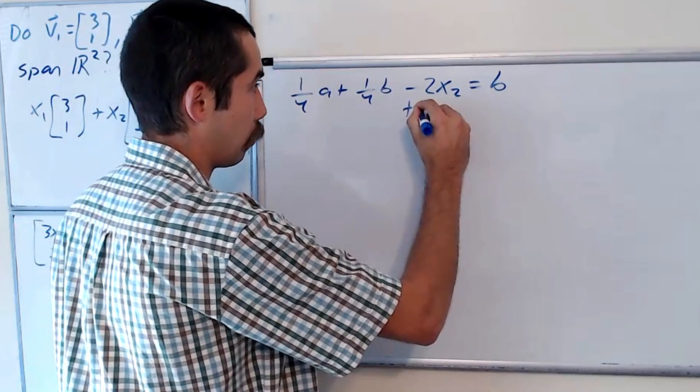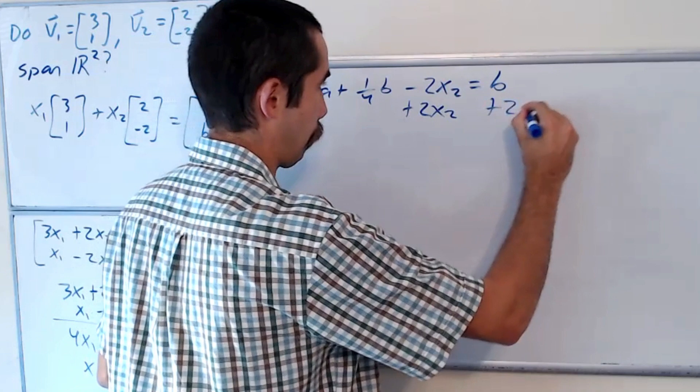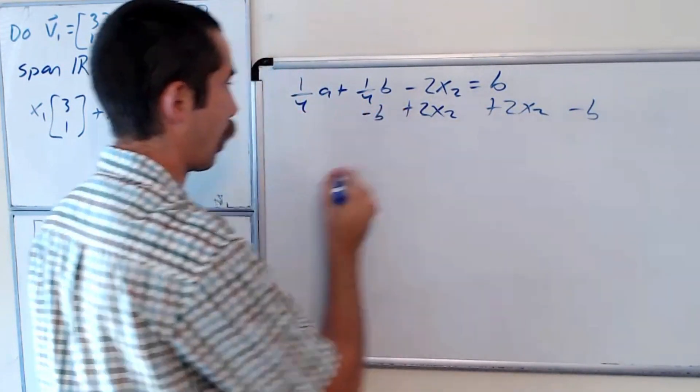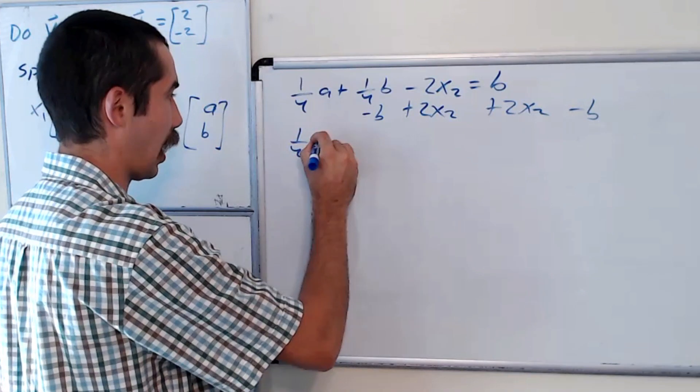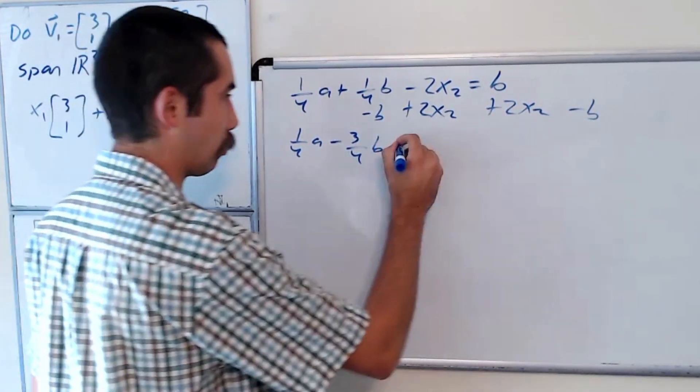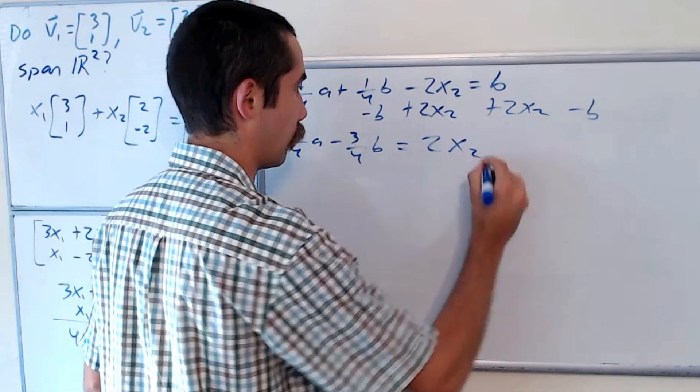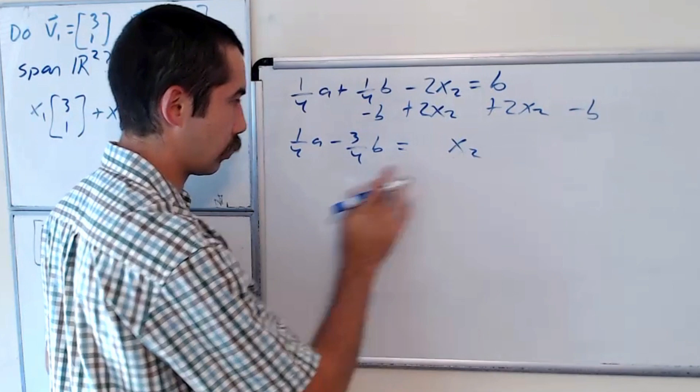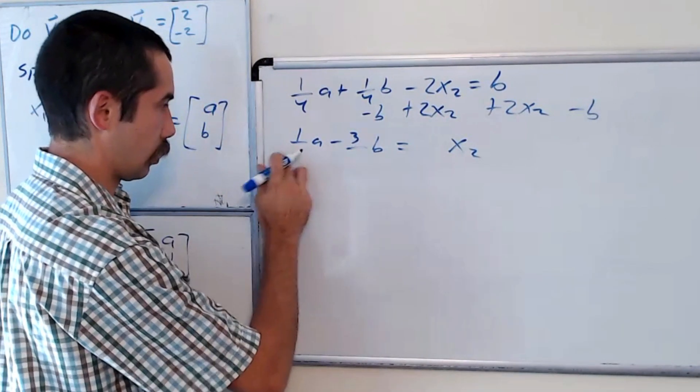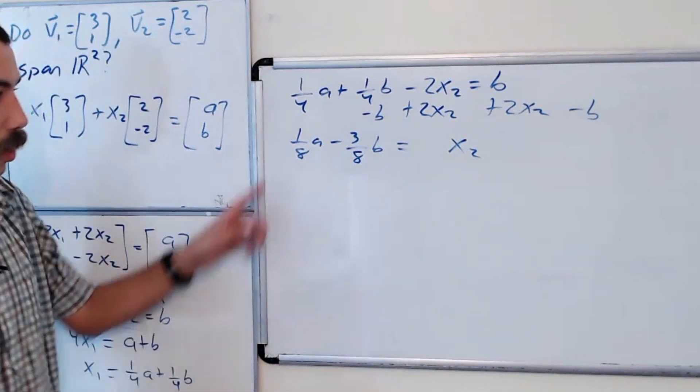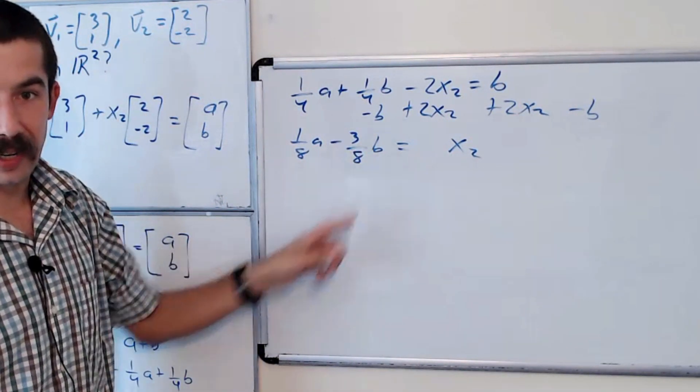Let's add over the x2 and subtract over the b. And we have one-fourth a minus three-fourths b equals 2x2. And so we divide by 2. And we have x2 equals one-eighth a minus three-eighths b.